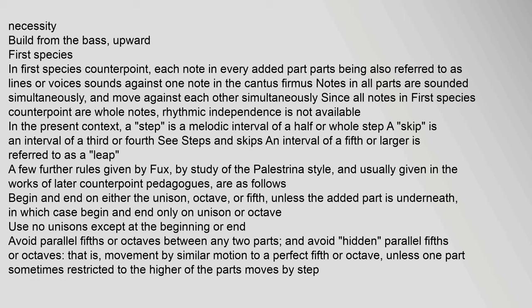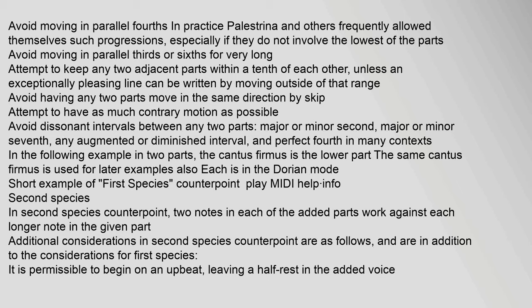Use no unisons except at the beginning or end. Avoid parallel fifths or octaves between any two parts, and avoid hidden parallel fifths or octaves — that is, movement by similar motion to a perfect fifth or octave — unless one part moves by step. Avoid moving in parallel fourths; in practice, Palestrina and others frequently allowed themselves such progressions, especially if they do not involve the lowest of the parts. Avoid moving in parallel thirds or sixths for very long. Attempt to keep any two adjacent parts within a tenth of each other, unless an exceptionally pleasing line can be written by moving outside that range. Avoid having any two parts move in the same direction by skip; attempt to have as much contrary motion as possible.